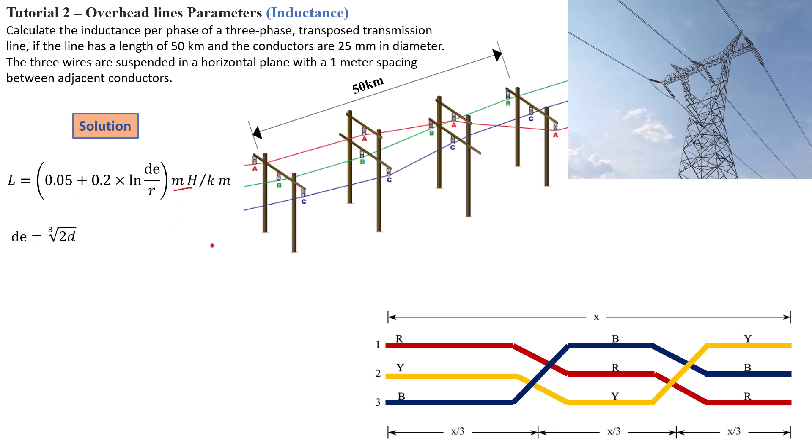So the first parameter here is dE. Now dE is related to the conductors that are suspended in a horizontal plane with 1 meter spacing. If dE is equal to the cubic root of 2d, that basically means your conductors, like in our case, are basically equally spaced. Now if you have a situation where these conductors are actually not equally spaced, which means the distance here is not equal to the distance here, in that case you're going to have dE must be equal to the cubic root of a times b times c.